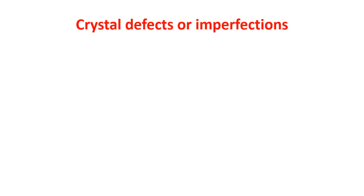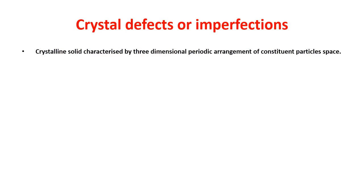Hello students, today we are going to study crystal defects or crystal imperfections. As we know, crystalline solids are characterized by a three-dimensional periodic arrangement of constituent particles in space. This should be perfect in their arrangement, meaning that the important characteristic of a crystalline solid is the regular and repeating arrangement of constituent particles.